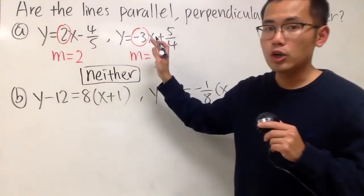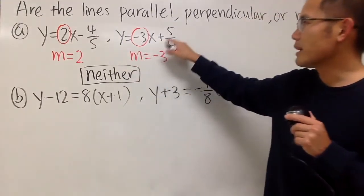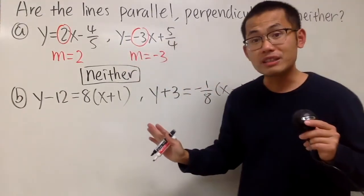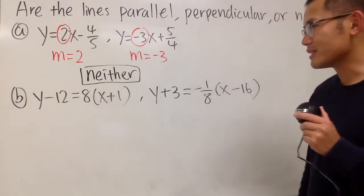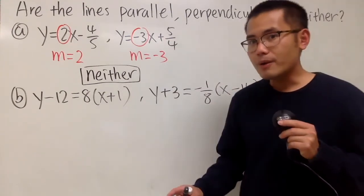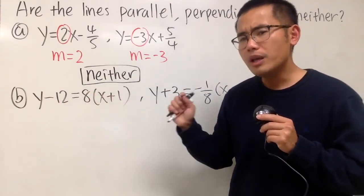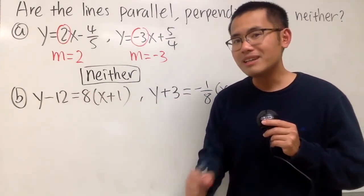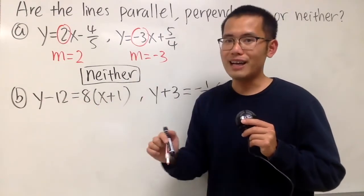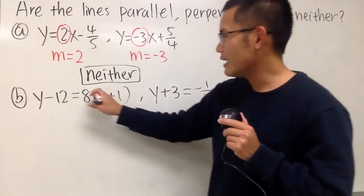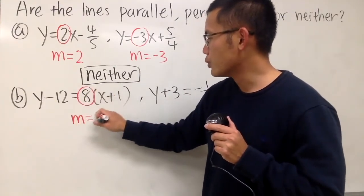Pay attention to the slope only. The b-values like negative 4 over 5 and positive 4 over 5 don't matter — we just care about the slope. Now for the second example, we have y minus 12 is equal to 8 times x plus 1. We already know the slope right away because this is the point-slope form of the line. The slope is equal to 8.